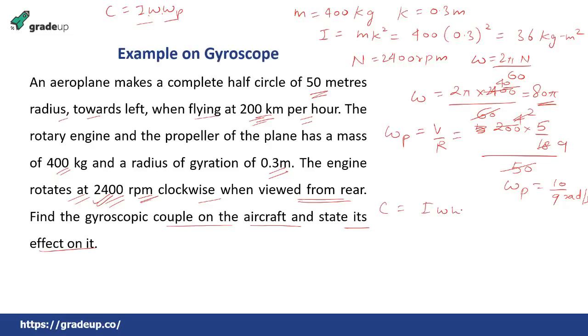So c equal to i omega omega p. See, i equal to 36, omega equal to 80 pi, omega p equal to 10 by 9. So this goes here 4 times. So this becomes 3200 pi. And if you calculate this you will get as 10053 Newton meters or 100.53 kilo Newton meter. This is the gyroscopic couple. This is the magnitude we have got.